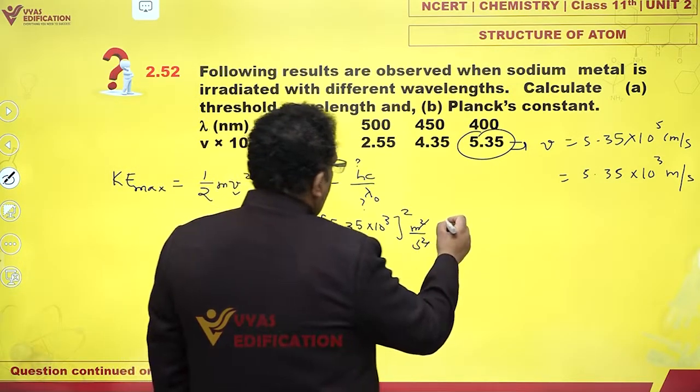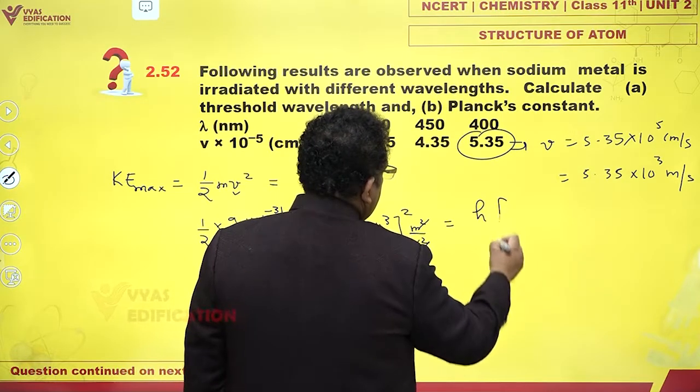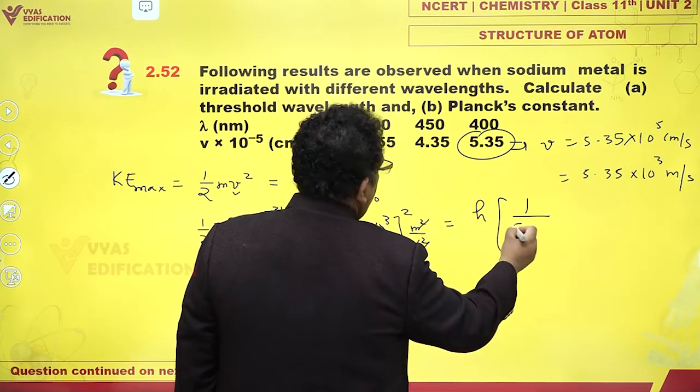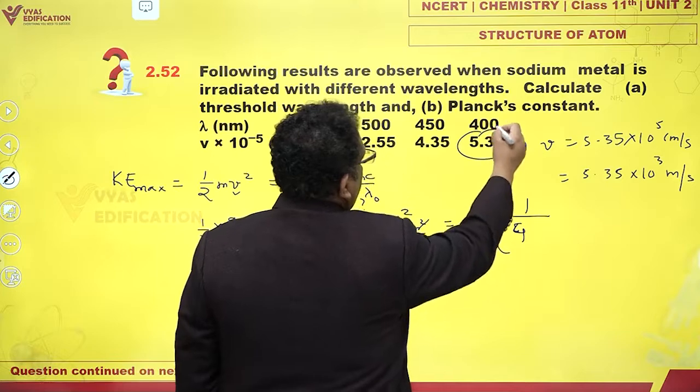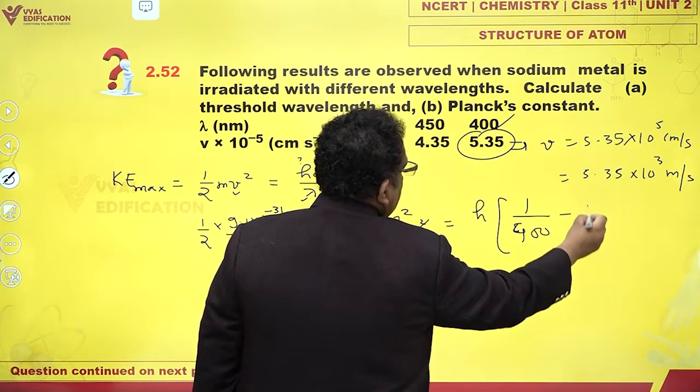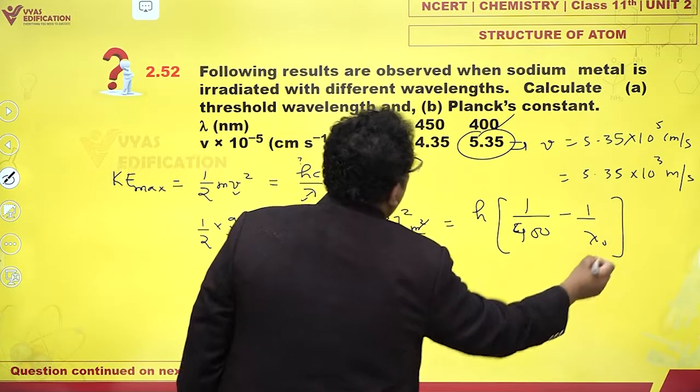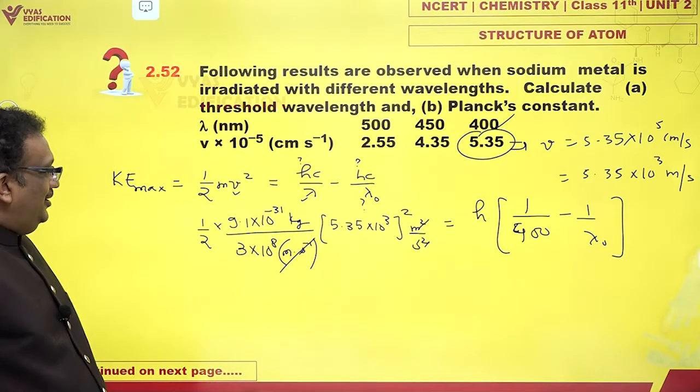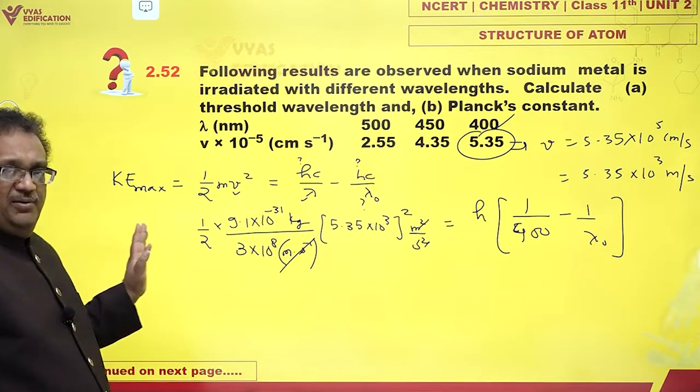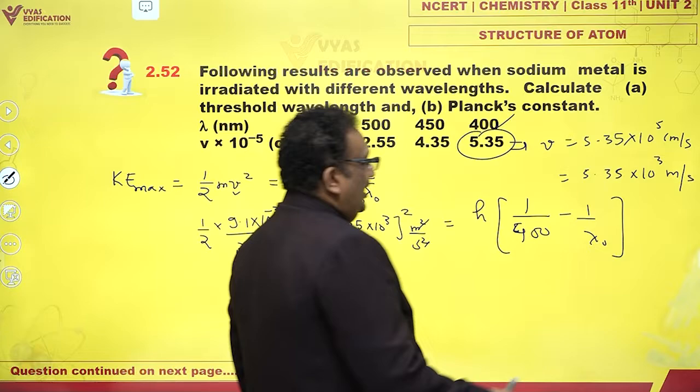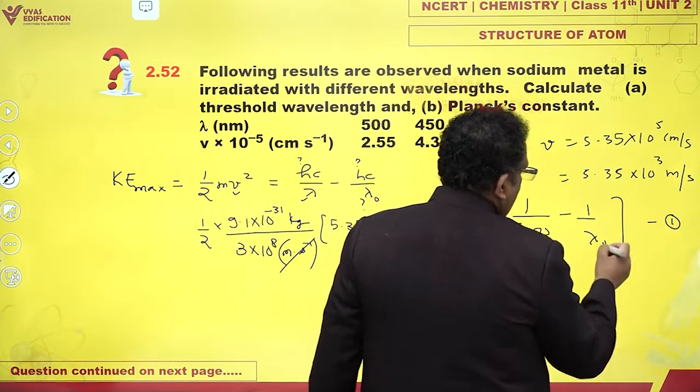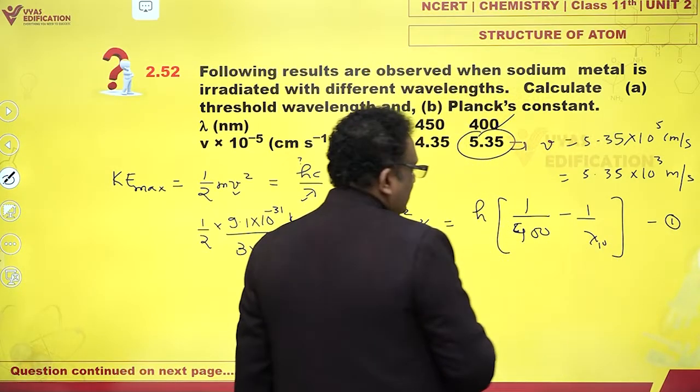The one meter per second will cancel from here. One by lambda minus one by lambda naught, this is H. One by lambda, this is 400, minus one by lambda naught which is threshold wavelength. I can calculate all this ugly number. I have one equation, lambda naught, lambda one naught like this.